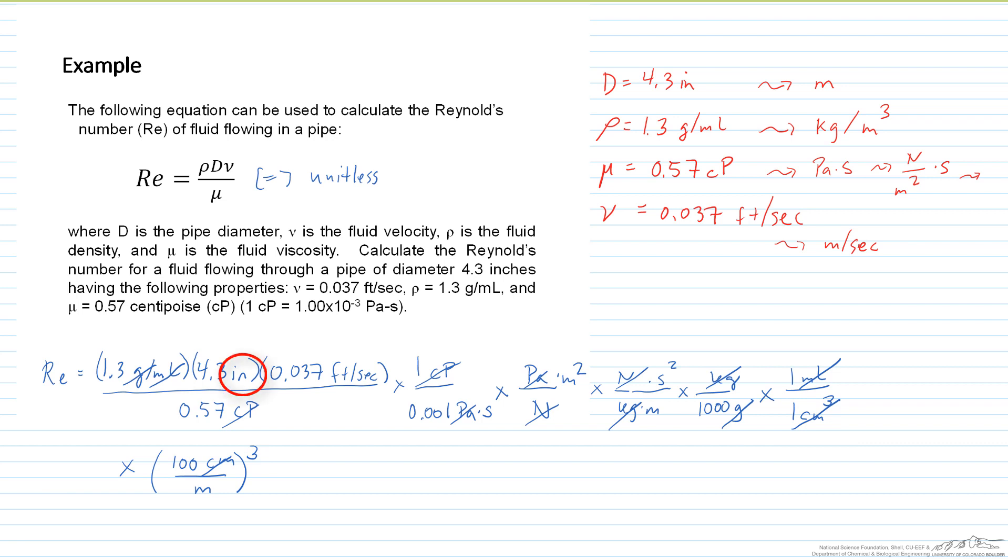Let's now get rid of the inches here. So I know that there are 12 inches in a foot and I know that there are 3.28 feet in a meter, so the meters, the feet cancel, the inches here cancel with the 4.3 in our denominator.